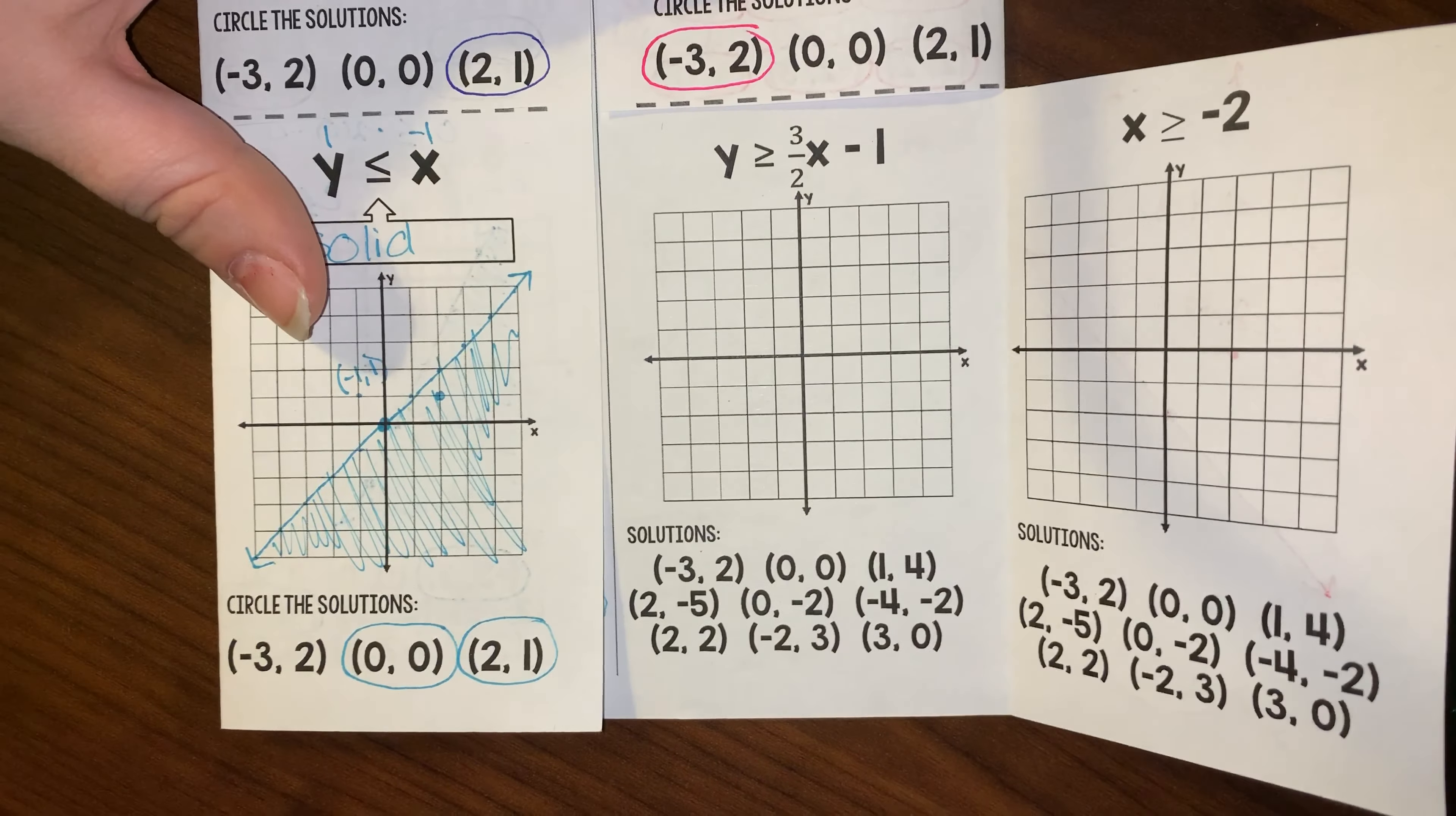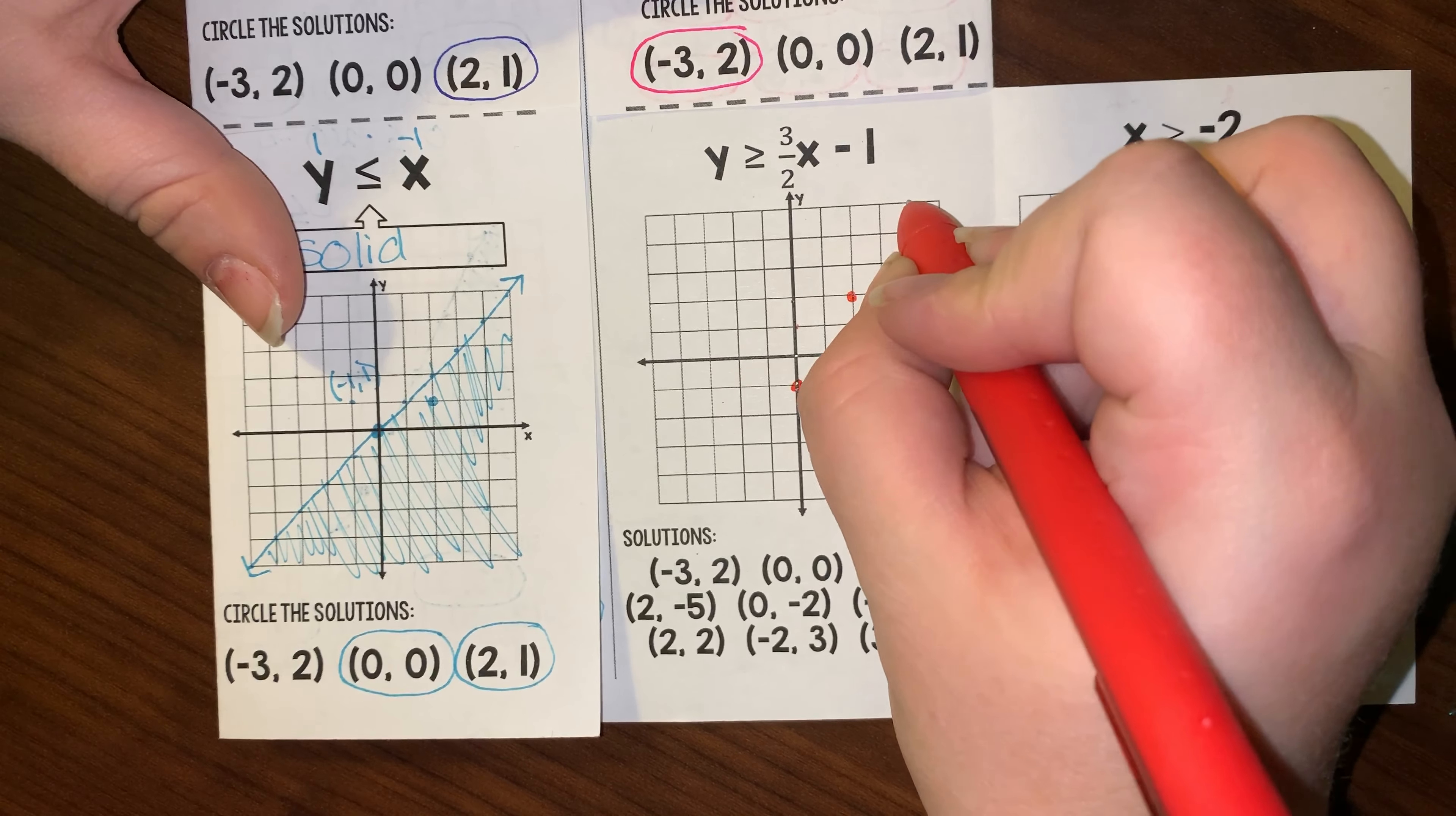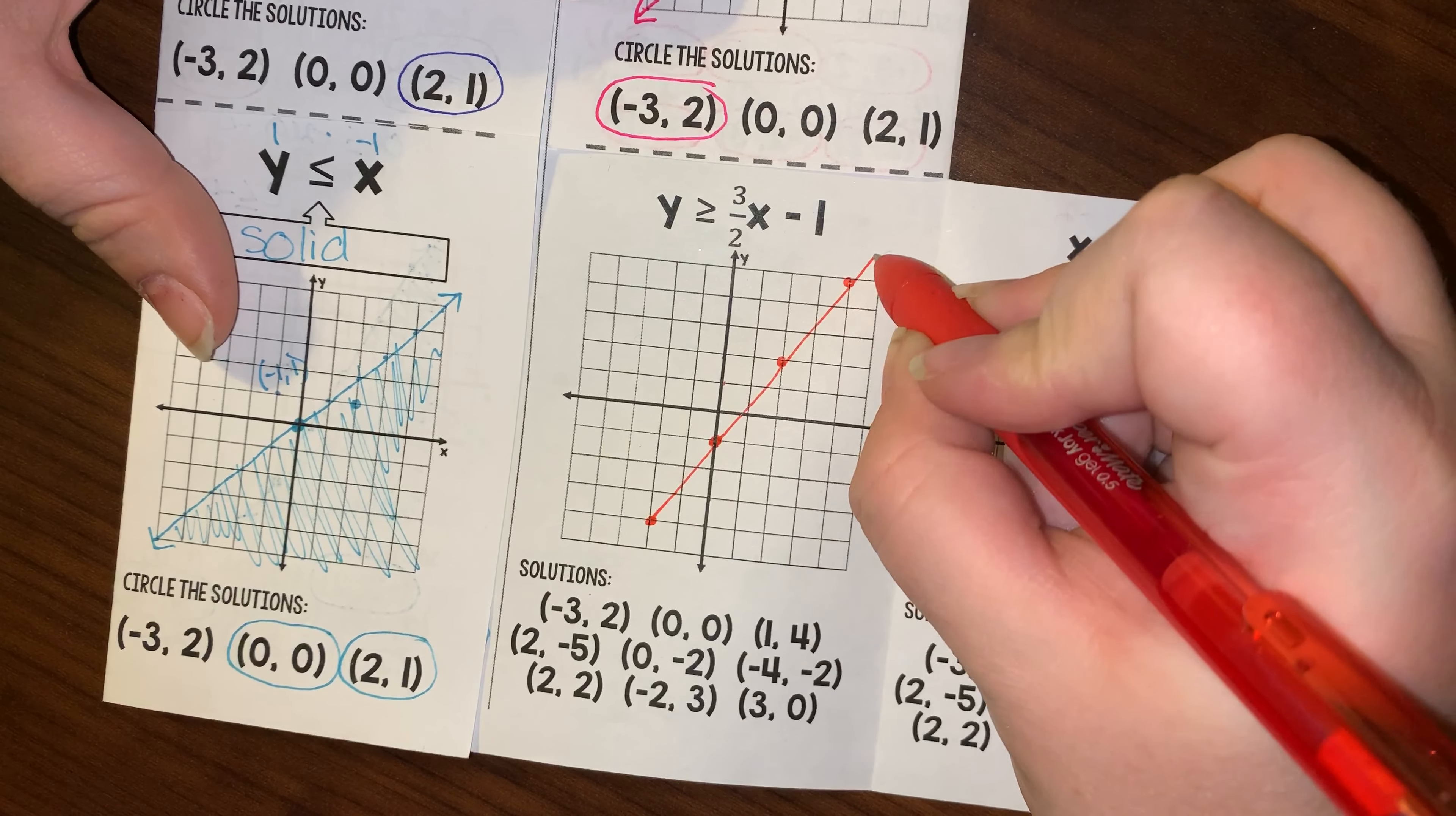As for the examples on the inside, I have a negative 1 y-intercept, and my slope is positive 3 over 2, so that means I'm going up 3 and to the right 2, or down 3 and left 2. And that is a solid line because it could equal anything on this line.